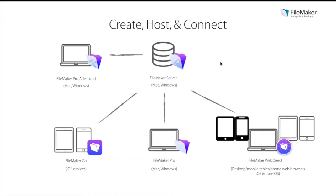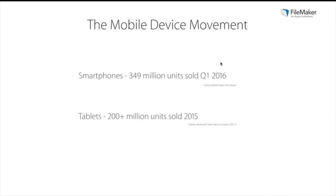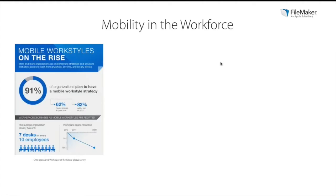Why do companies gravitate toward FileMaker as a strategic mobile option? A recent Citrix article noted that 61% of workers reported working outside of the office at least part of the time. With the amount of smartphones and tablets being shipped and bought each year, consumers transformed their personal lives, and these mobile expectations have been shifting towards the workplace. According to the Citrix-sponsored Workplace of the Future Global Survey, 91% of respondents plan to have a mobile strategy, with 82% estimated to have implemented one.